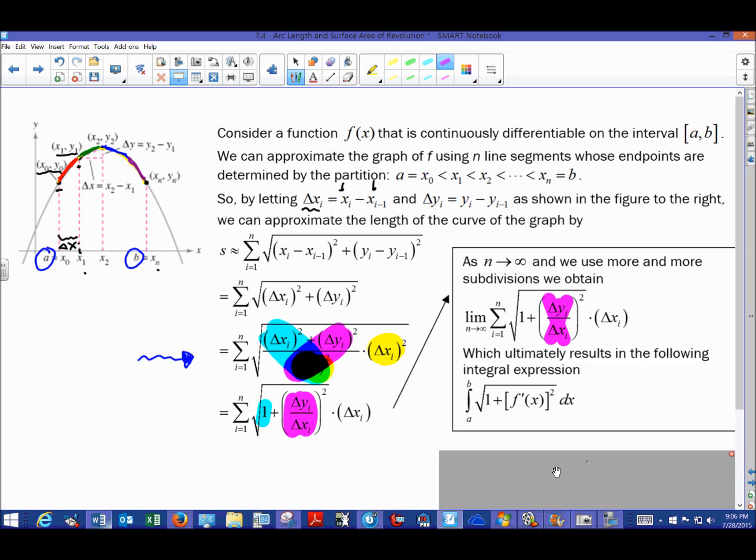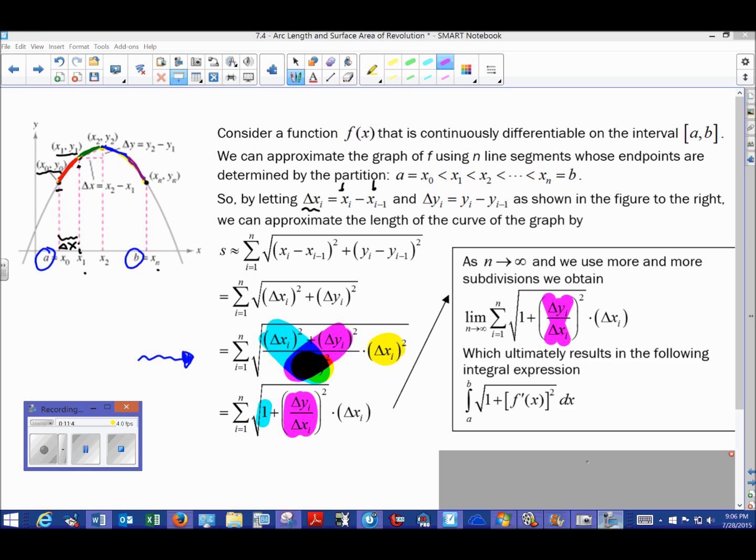Our delta x notation can change to the differential notation dx, and this becomes the formula ultimately that you will use for all of your arc length problems. In future videos I'm going to show you some concrete examples, but this at least gives you an idea about where this vastly important formula for arc length comes from. Thanks and I'll see you next time.